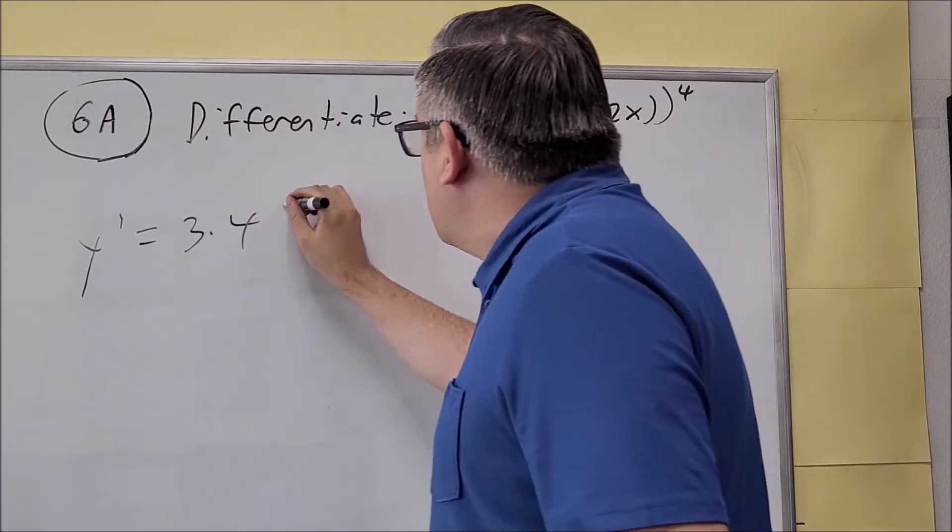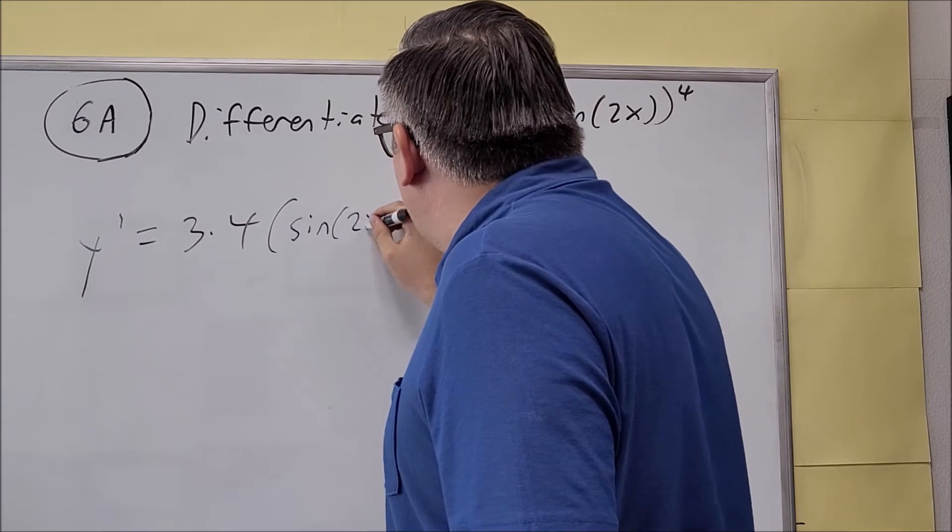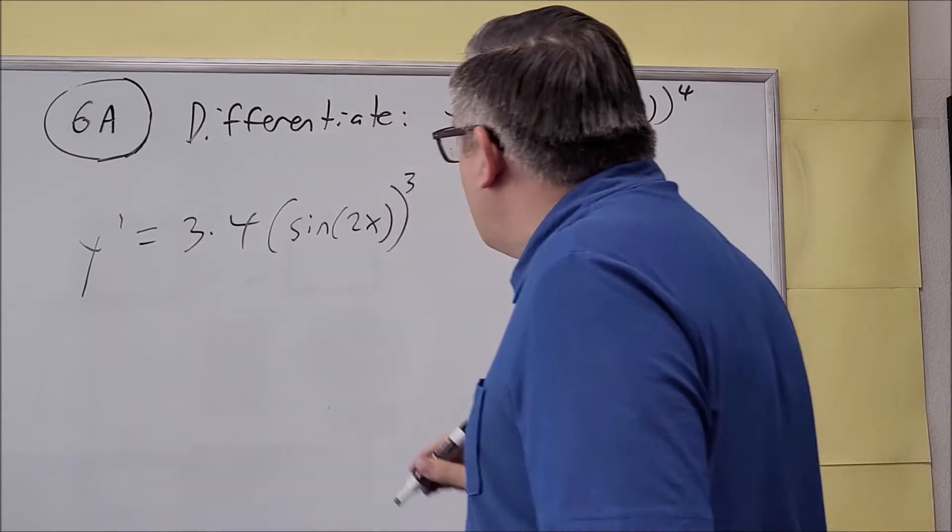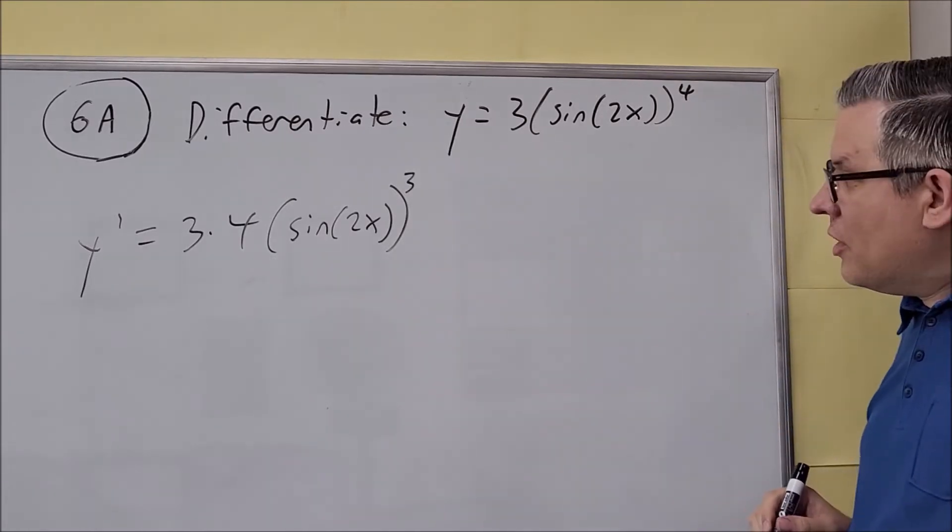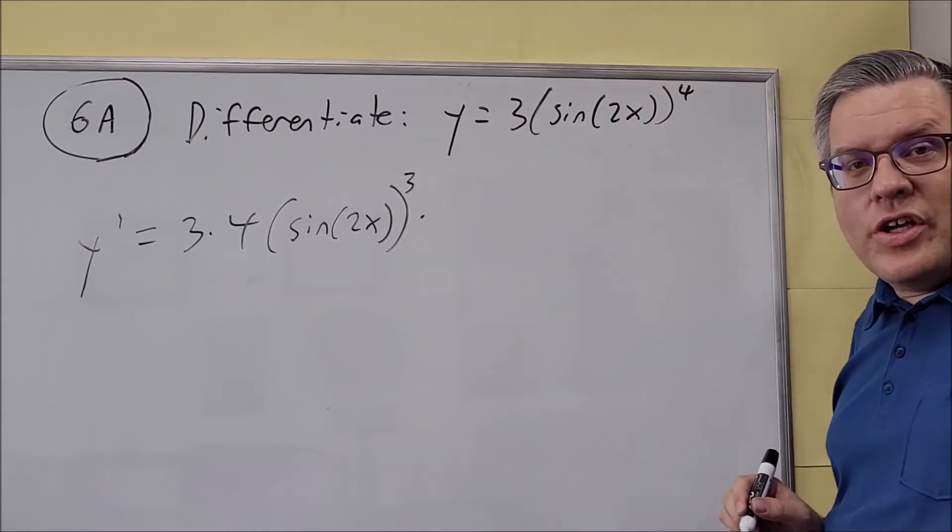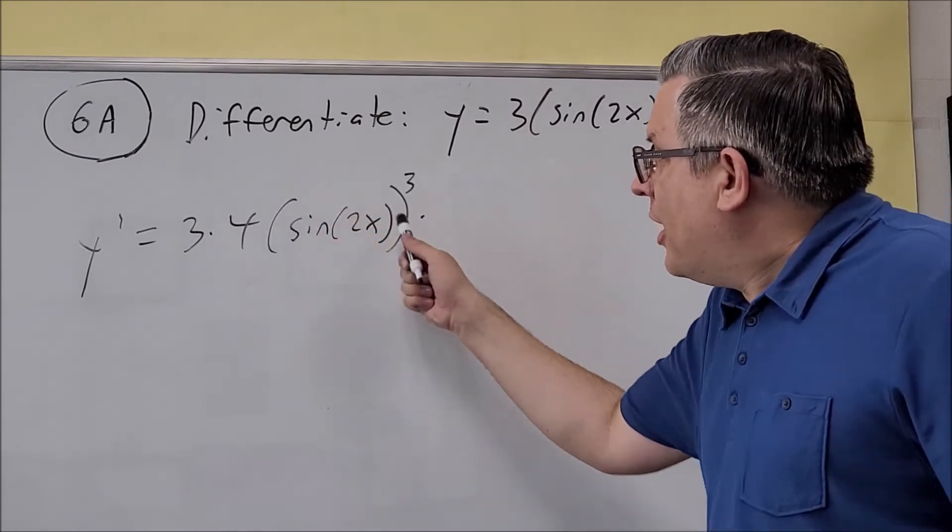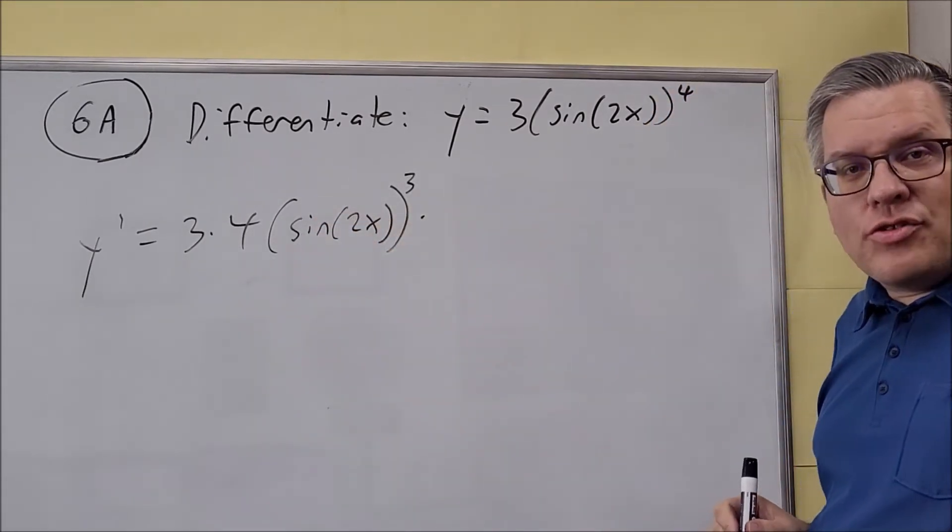Let me bring the four down in front like this. We have sine of 2x. Now this becomes a third power. So four comes down, and then subtract one. But now, we have to multiply this by the derivative of the inside. So we have to multiply by the derivative of sine 2x.